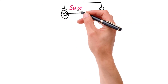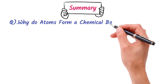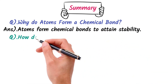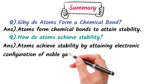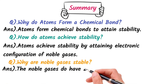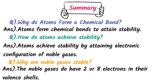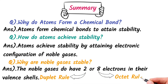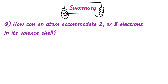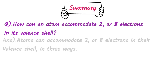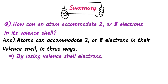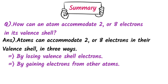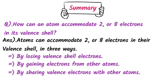Let's summarize the whole concept. Why do atoms form a chemical bond? Atoms form chemical bonds to attain stability. How do atoms achieve stability? Atoms achieve stability by attaining the electronic configuration of noble gases. Why are noble gases stable? Noble gases have two or eight electrons in their valence shells. Attaining two electrons in the valence shell is called the duplet rule, while attaining eight electrons is called the octet rule. Atoms can accommodate two or eight electrons in their valence shell in three ways: by losing valence shell electrons to other atoms, by gaining electrons from other atoms, or by sharing valence electrons with other atoms.